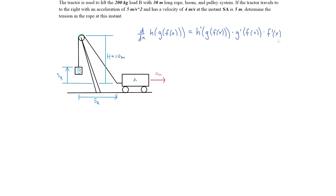Technically, x is a function as well, so we multiply by d/dx of x, which is simply 1. However, if it was a time derivative, the value of x would need to be differentiated with respect to time, not with respect to x. If you understand that process in general, you should be able to solve this problem quite easily.